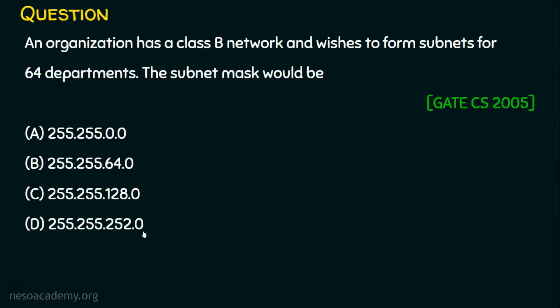If we keenly analyze this question, we are obviously going to do subnetting, but this subnetting is not for host requirements — rather, it is based on network requirements. The organization has a class B network and wants to migrate from classful addressing to classless addressing by subnetting based on network requirements. They have 64 departments, so they need 64 networks or subnetworks.